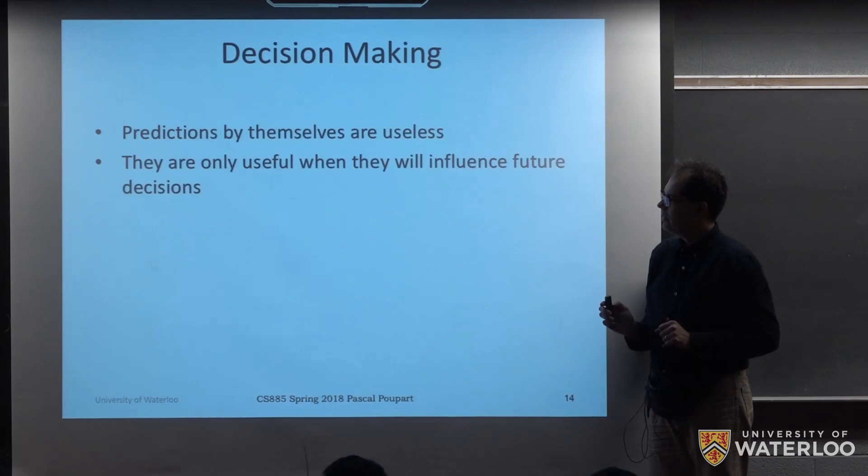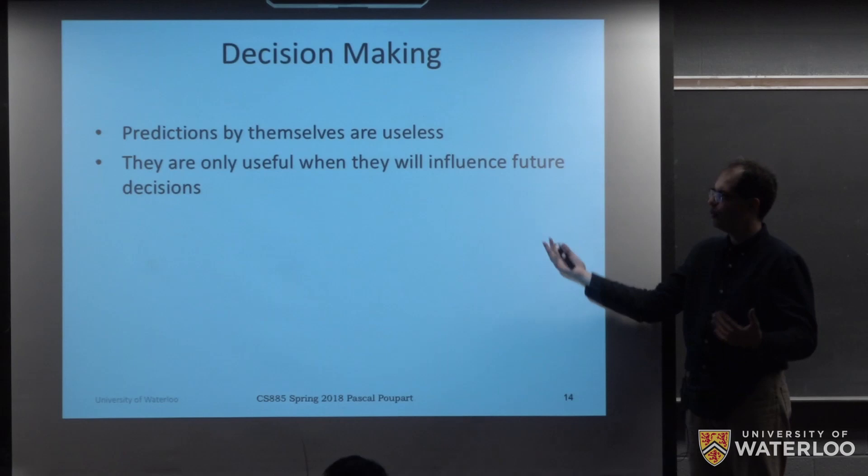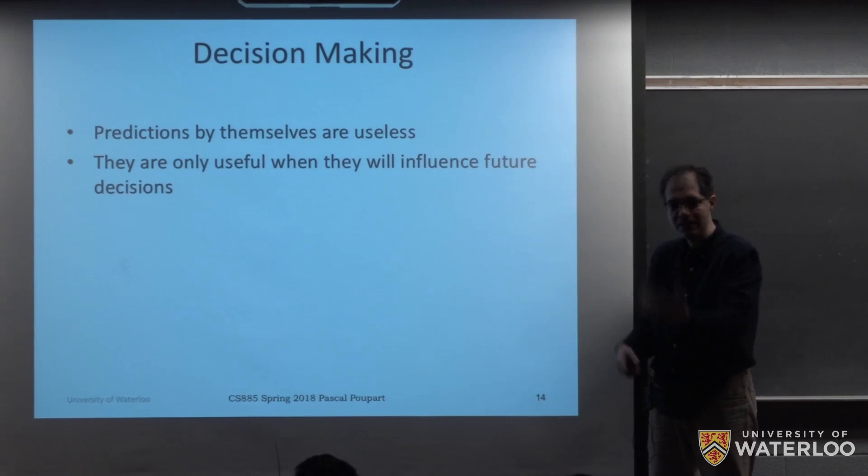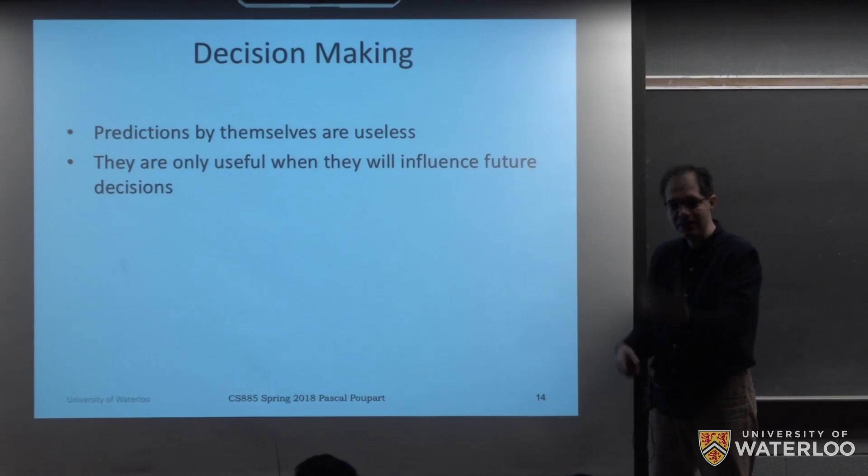So this is good — we can make some predictions. However, predictions by themselves are not very useful. Whenever we make a prediction, it's because we want to use that prediction to select some action and make some decision. This is going to lead to the problem of decision making, and this is where we're going to need a model that's more comprehensive — one that takes into account actions as well. And this will lead to Markov decision processes.